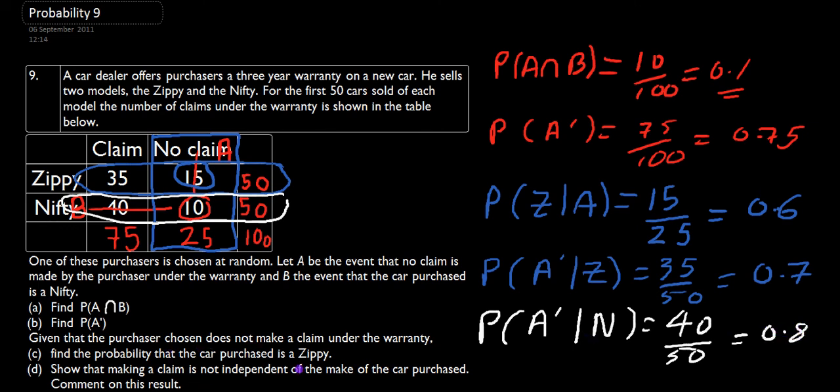So we've definitely shown that making a claim is not independent of the make of car purchased. We've got different values of making a claim for different purchased cars. If you purchase a Zippy, you'll make a claim 0.7 of the time. If you purchase a Nifty, you'll make a claim 0.8 of the time. So for you, it would be wiser to purchase a Zippy if you want a reliable car. Or if you're the manufacturer, maybe you want to try and sell more Nifties. So there's a comment you can make on the result that makes sense.